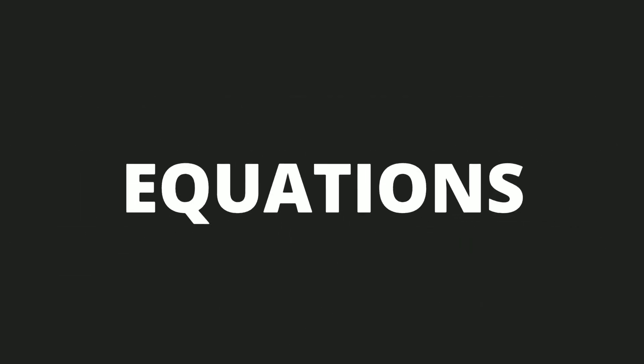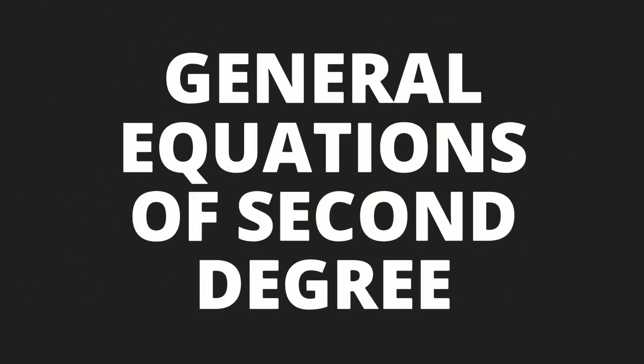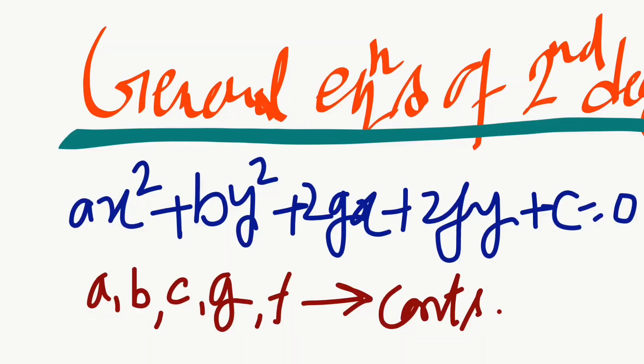And in this video, I'm gonna discuss about the general equation of second degree. The general equation of second degree looks like this: ax squared plus by squared plus 2gx plus 2fy plus c equals to 0.